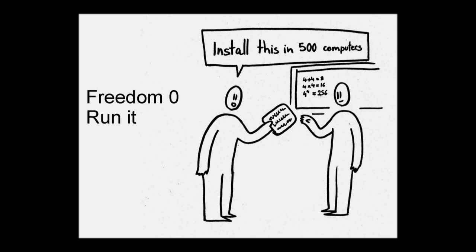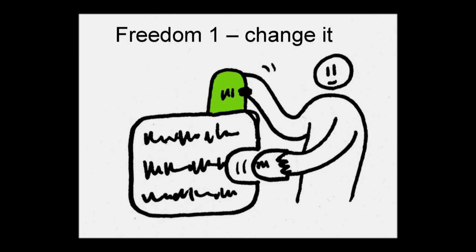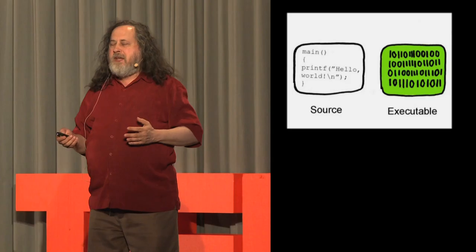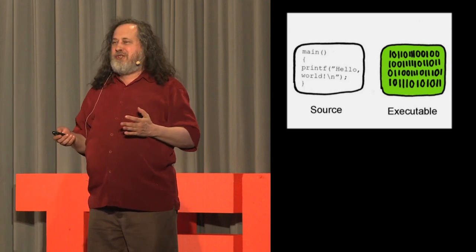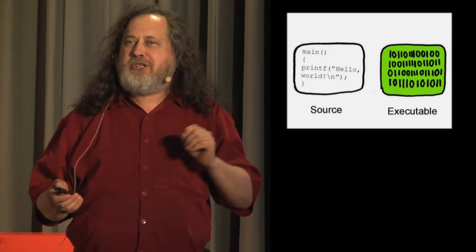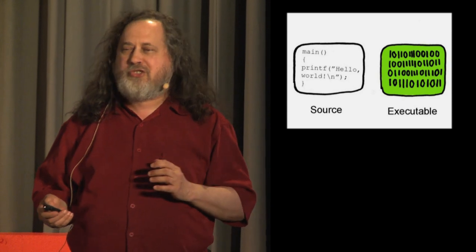Freedom zero is the freedom to run the program as you wish, for whatever purpose. Freedom one is the freedom to study the source code of the program and change it, so it does the computing you want. Every program typically has two forms: the source, which you can read and understand if you know the programming language, and the executable, which is a bunch of numbers that even a programmer can't easily figure out. To give you the real possibility to study and change a program, they've got to give you the source code.